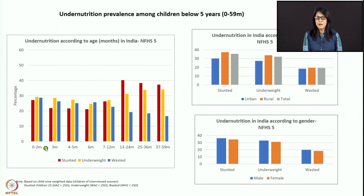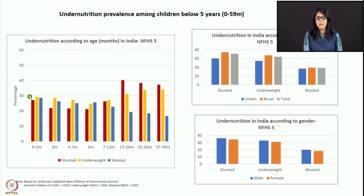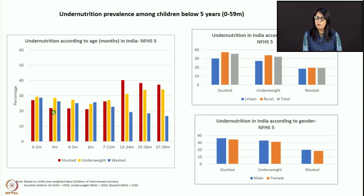Looking at three-month age data, wasting has gone from about 29 percent down to maybe 26 percent — not much decrease. Underweight pretty much stays the same. There is a little bit of stunting decreasing, which is good. But at four to five months of age, wasting has not decreased much, underweight has not decreased much, and stunting stays as it is. The same trend continues at six months. In the first six months where there should be tremendous growth catch-up and almost zero growth faltering, we are seeing a lot of growth faltering and very poor growth catch-up.